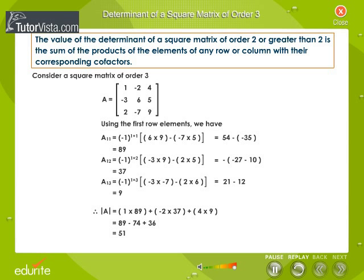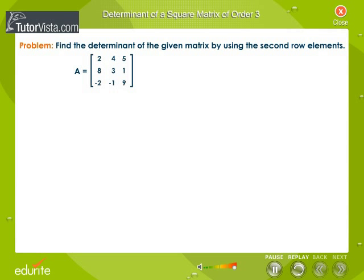Click on the numerical button. Here is a problem for you to solve. You need to find the determinant of a 3 by 3 matrix A by using the second row elements of the matrix.